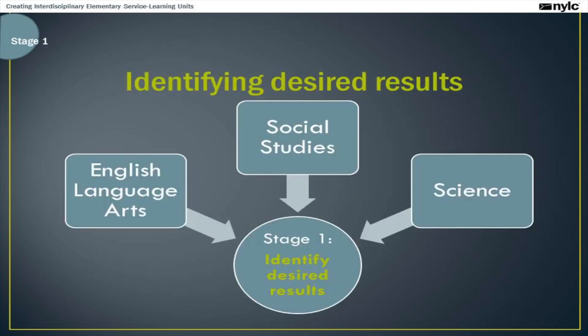In stage one of the unit plan, we're really focusing on framing the unit by identifying our desired results. This stage, found on pages one through three of your unit plan, is where you'll identify your standards, create your big ideas and essential questions, and outline what students will know, be able to do, and understand by the unit's end. My topic's main focus is social studies, but there will also be English language arts standards I can incorporate through informational texts and speaking and listening standards. While I had initially planned on including math as a third discipline, I found a much more natural alignment to the Minnesota science standards, so I chose to focus there for this example.